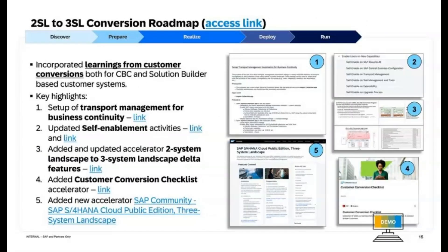SAP Activate for Conversion of SAP S/4HANA Cloud Public Edition 2-System to 3-System Landscape: The SAP S/4HANA Cloud Public Edition Roadmap for converting from a 2-system to a 3-system landscape has been updated with insights from customer conversations using both CBC and Solution Builder-based solutions. Key updates include setting up transport management for business continuity, revised self-enablement activities, and the addition of a new accelerator highlighting delta features for the landscape conversion. A customer conversation checklist accelerator and a new SAP Community accelerator for the SAP S/4HANA Cloud Public Edition 3-System Landscape have also been introduced to support the conversion process.